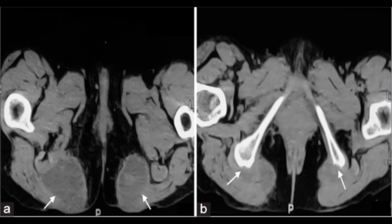This is her CT scan, which shows these fluid collections bilaterally — they're pretty big on the CT scan. There is also a little bit of cortical irregularity here; the ischial tuberosity doesn't look totally normal in this patient.